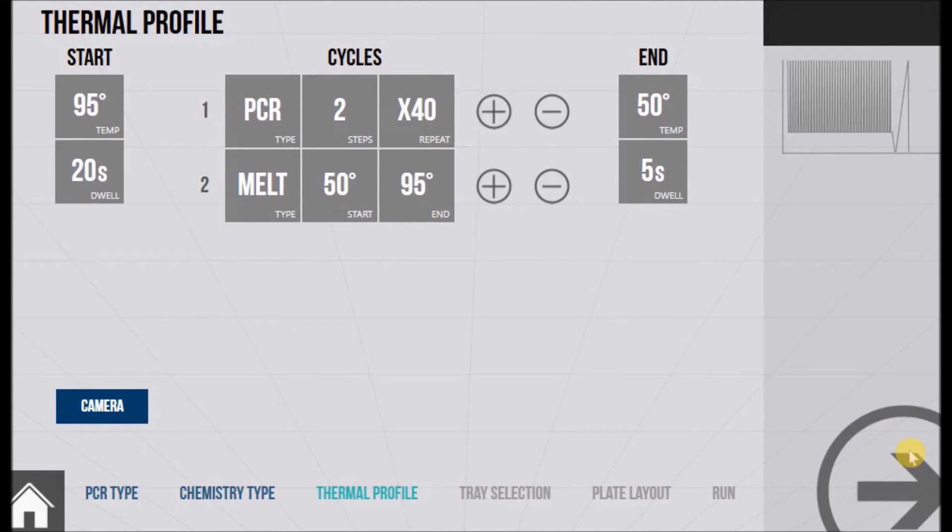Here the thermal profile is designed. As you can see it's split into three sections: a start or initial denaturation, the reaction itself, and the end. The end section is in place to bring the plate to a temperature cool enough to touch ready for when it's removed from the machine. Simply touch any of these sections to alter the parameters.